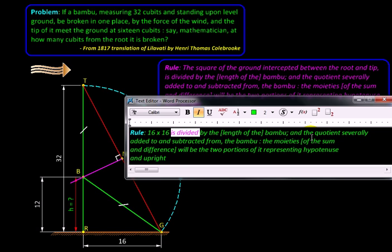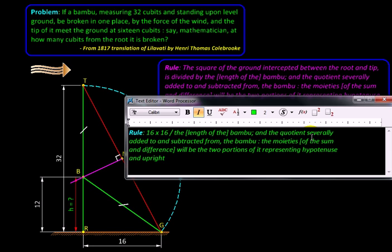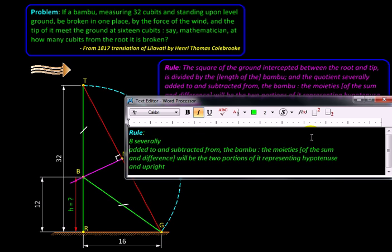Then it says is divided by, so we will show the division sign, then is divided by the length of the bamboo, which we know to be 32, and the quotient. So let us take the quotient: 16 into 16 upon 32 would give us 8. The quotient, it says, added to and subtracted from.